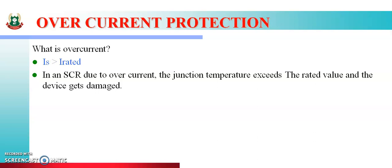In overcurrent, the junction temperature exceeds the rated value and the device gets damaged. If it exceeds the rated value, the junction temperature increases and the device can get damaged.